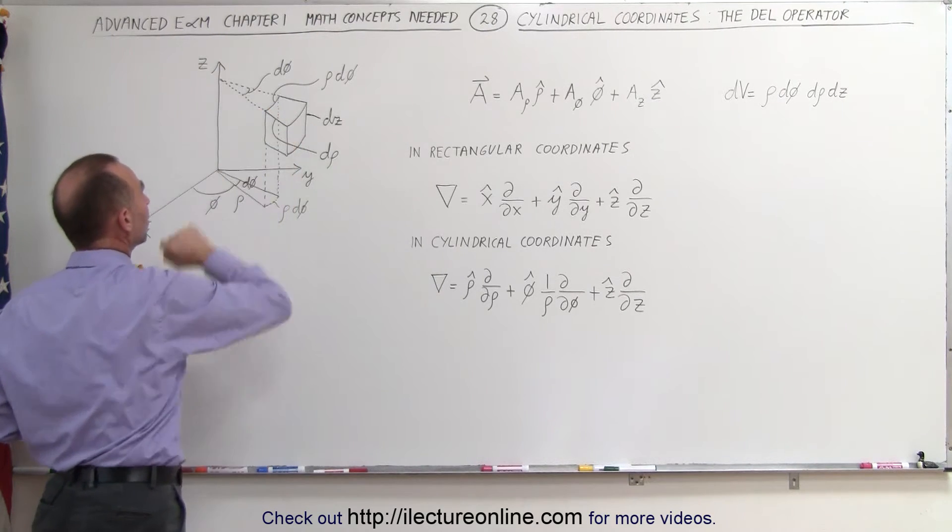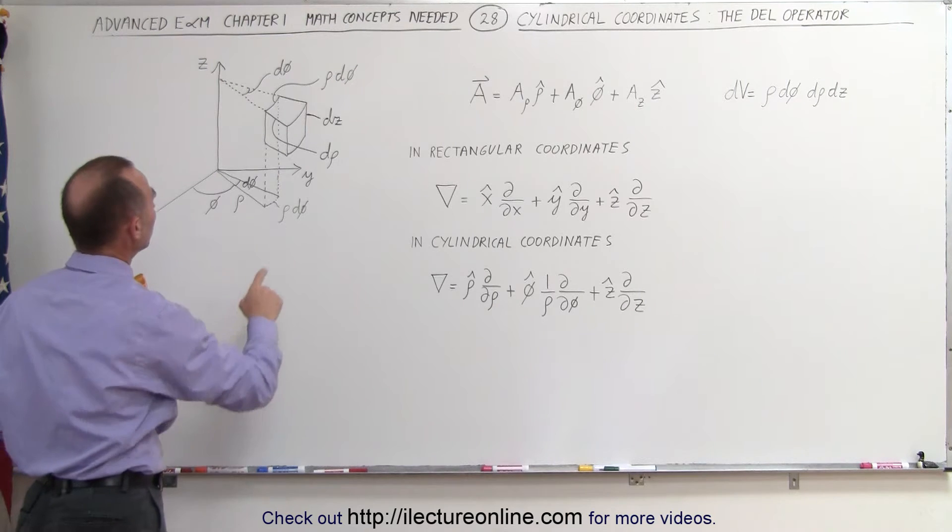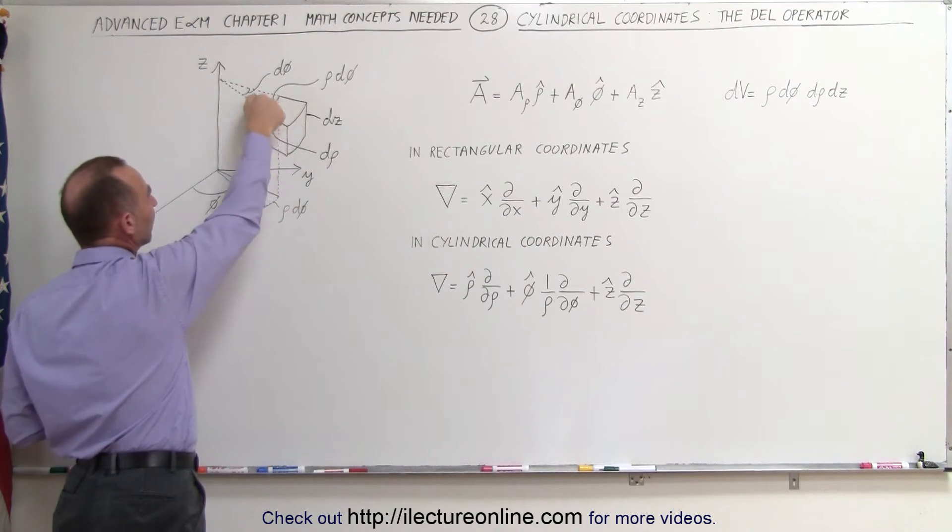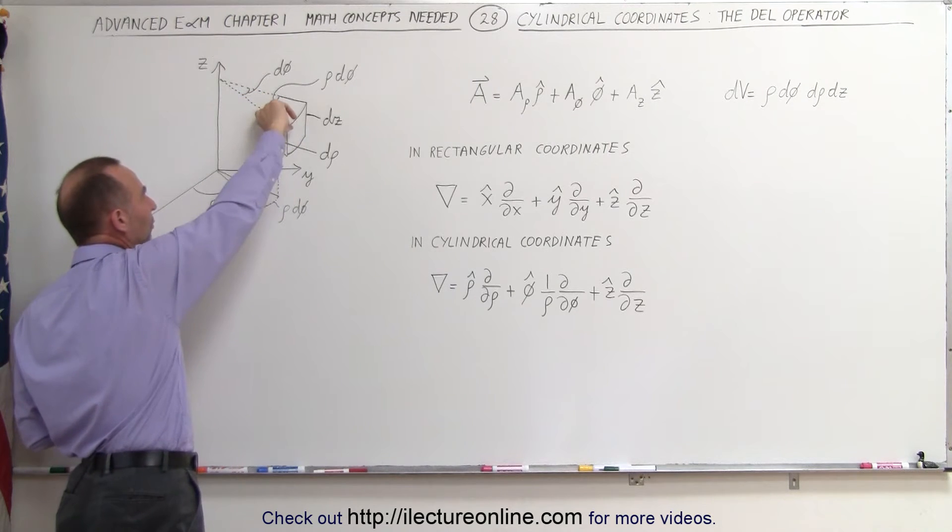Here we have a small volume element in cylindrical coordinates. Notice the distance to the volume element is rho. The change in the distance in the direction of rho is going to be d rho.